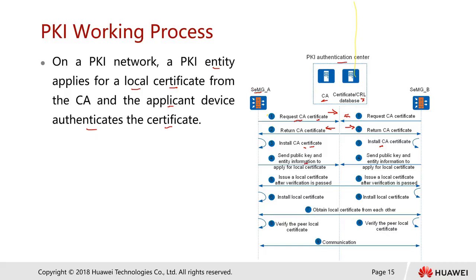Step four: you have to generate a key pair — a public and private key. As an individual entity, you only need to send the public key along with your information, such as hostname, desired certificate duration, organization name, and department. Assuming the CA approves, the CA will issue the local certificate with the CA's signature, and you install the local certificate.